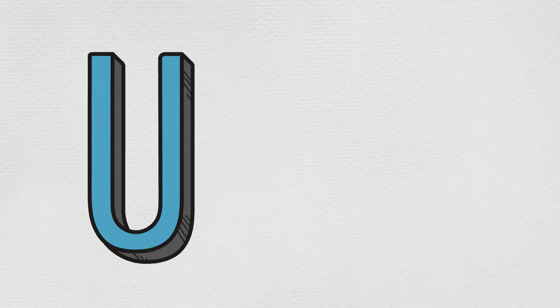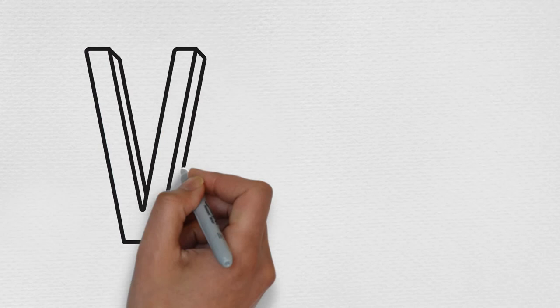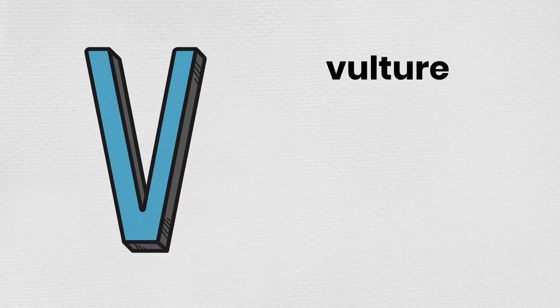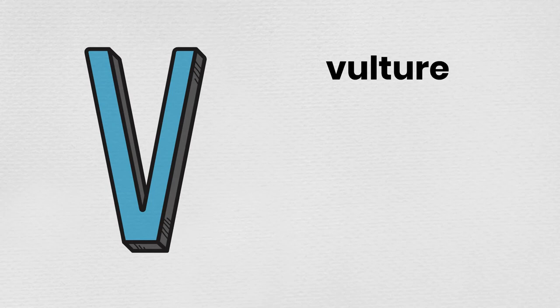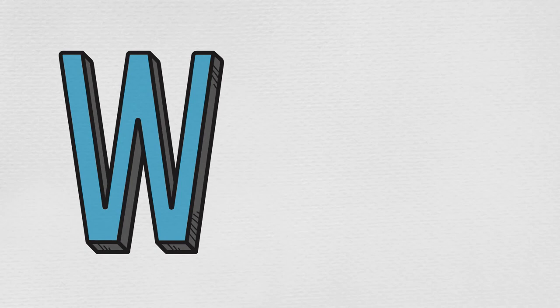U is for unicorn. V is for vulture. W is for wolf.